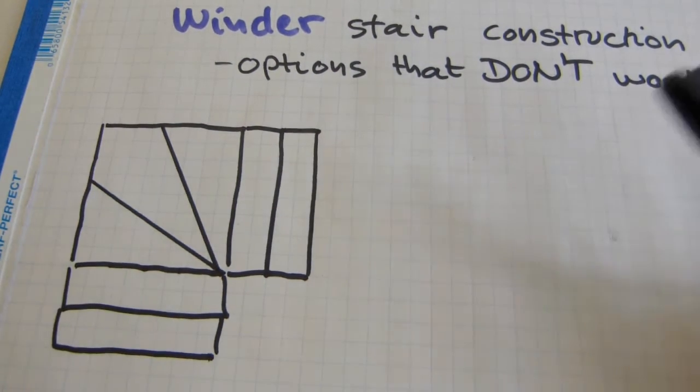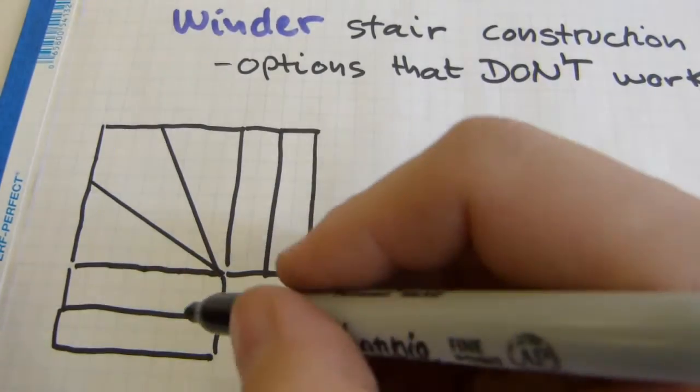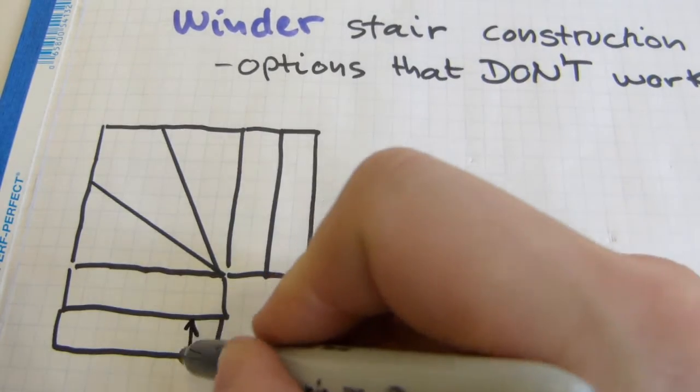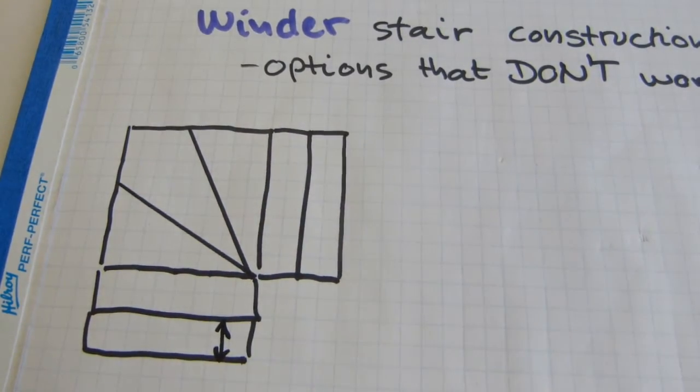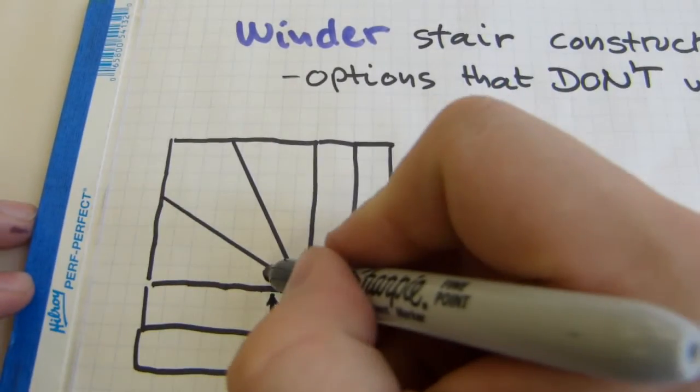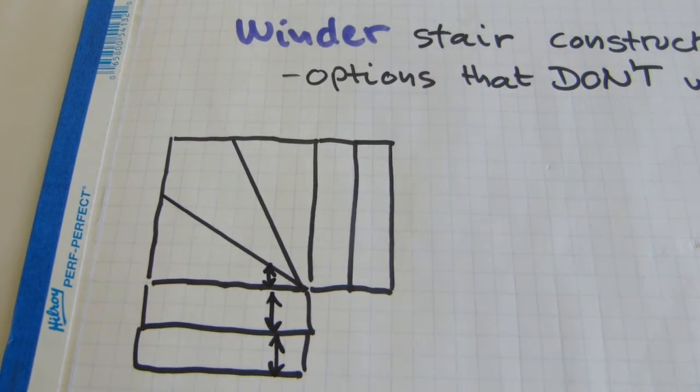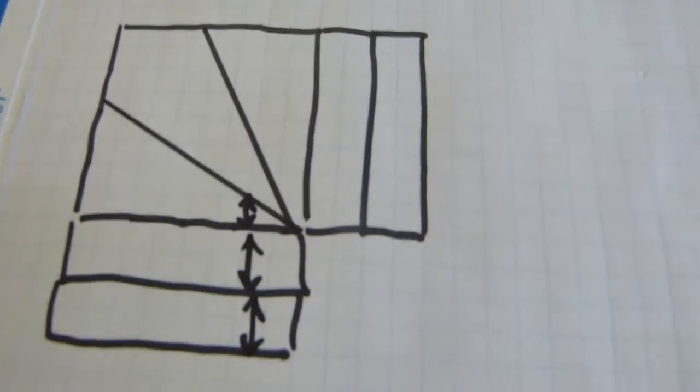This is how a set of winder stairs look like. And usually what the problem is, is the length of run. Here is two squares, the length of run. Also two squares on that one. Here it's just one square on the winder where the stair takes a turn.